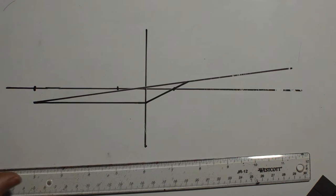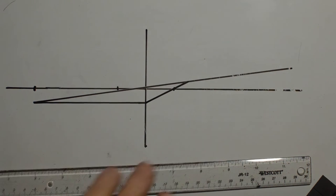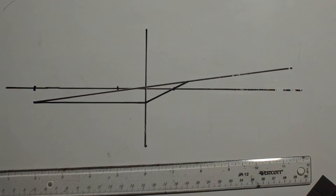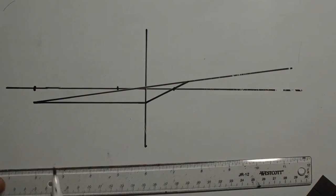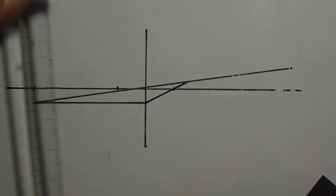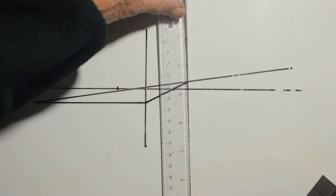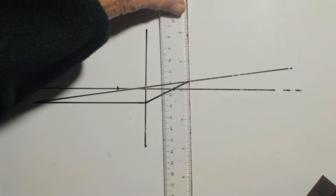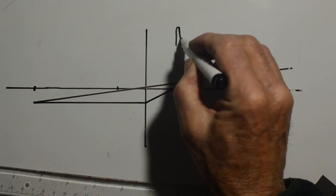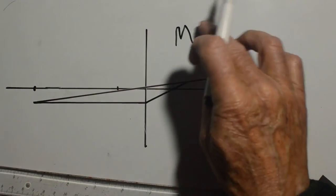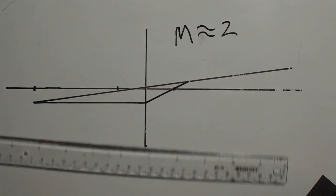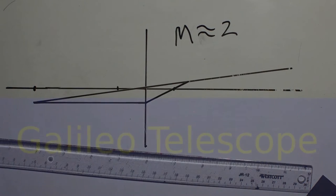If we were to extend this, it would get even smaller here, even bigger here. So in this case, our magnification here is half an inch, and here it's basically a quarter of an inch. It's approximately two, approximately two.